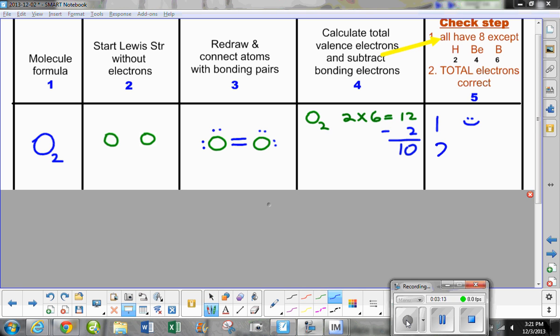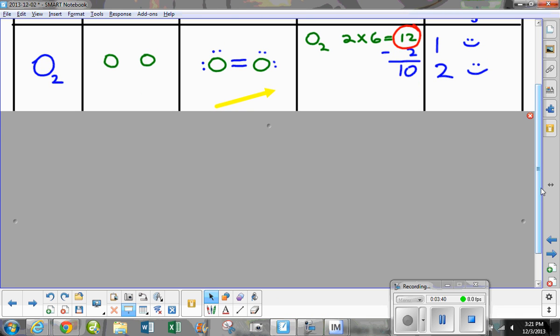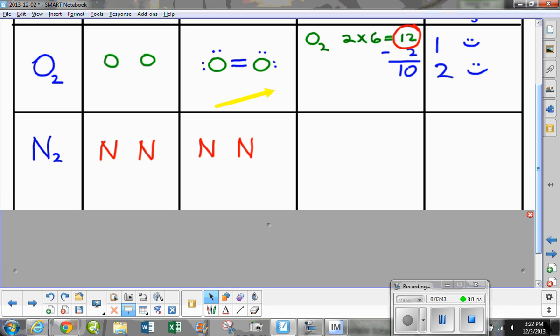Rule number two, down here, the total electrons have to be correct. What are the total electrons? Well, they're right here. Twelve. So, do I have twelve? Two, four, six, eight, ten, twelve. And that is correct, so I can put another happy face. So, that's my first example of the use of a double bond. Now, let's do nitrogen.